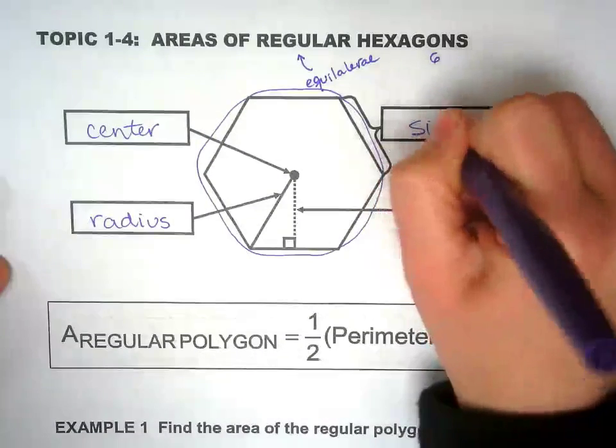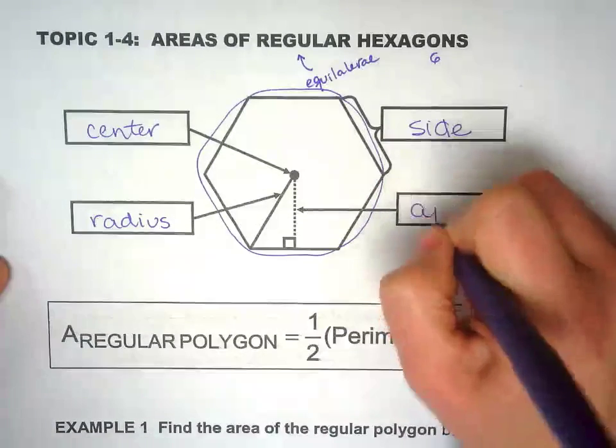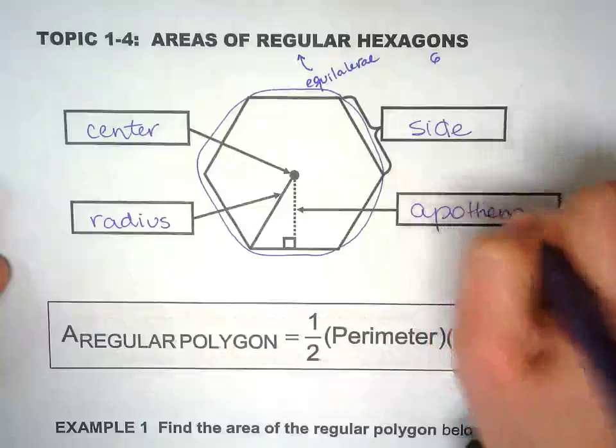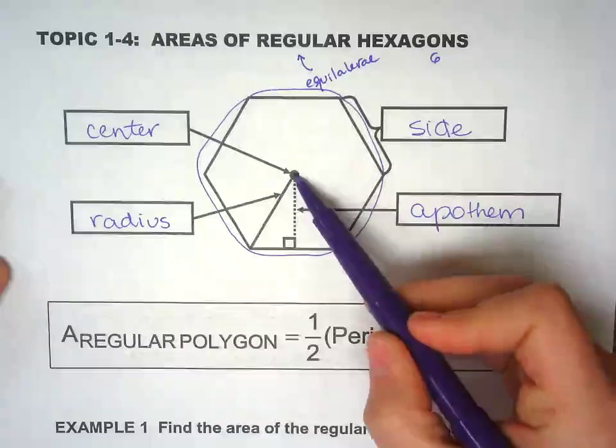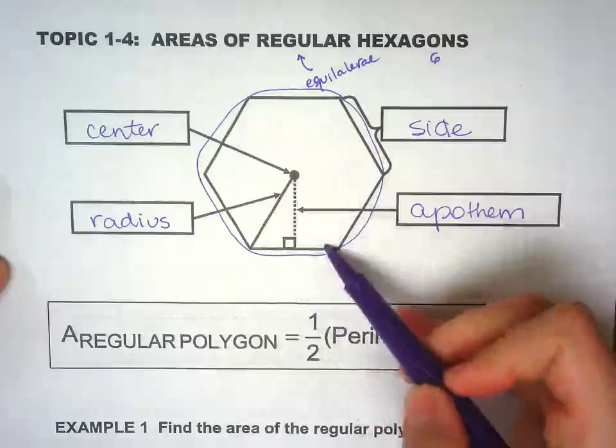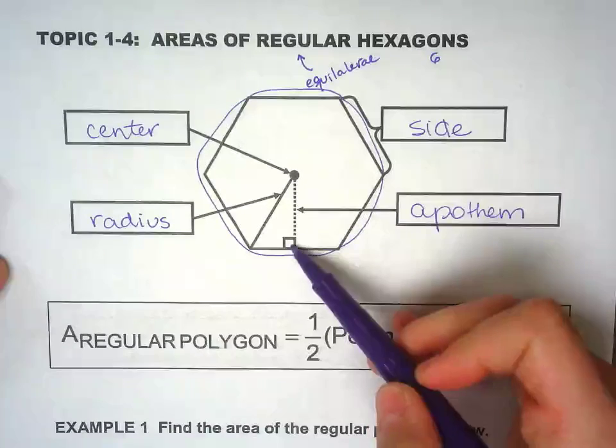This one is the side and apothem. Remember the apothem is the distance from the center to the side and it makes a 90 degree angle with the side.